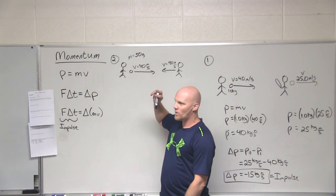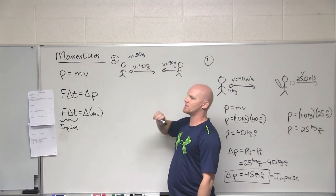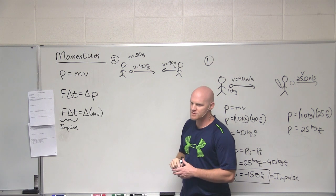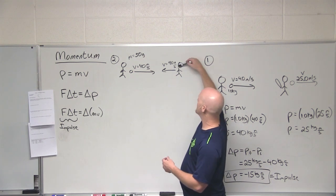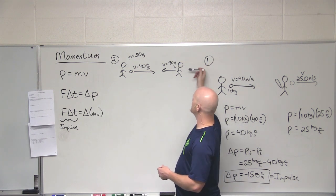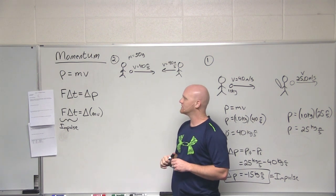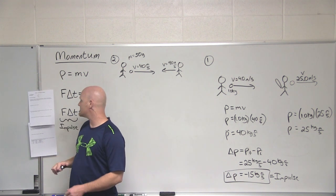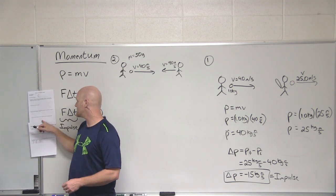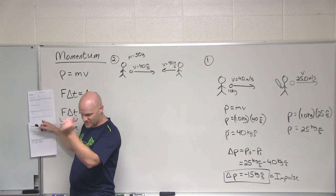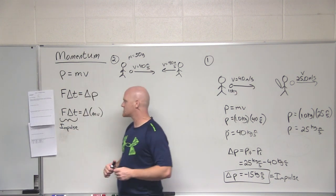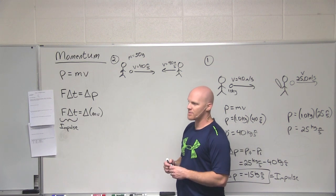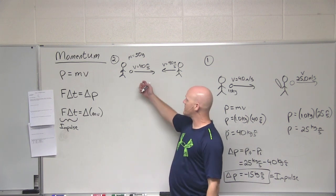Alright, question number two. We have a 50-gram tennis ball, and this player is going to serve the ball traveling 40 meters per second in one direction. And our lovely opposing player is going to hit the ball back with a velocity of 40 meters per second. So the two questions you're asked: first one is, what is the change in momentum of the ball? And then finally, if the ball is in contact with the racket for 0.050 seconds, what average force was applied to the tennis ball? So the first question is just what's the change in momentum. So in this case, what's the initial momentum of this ball?